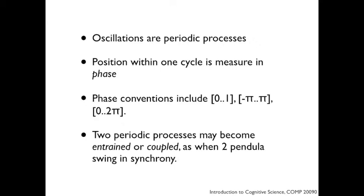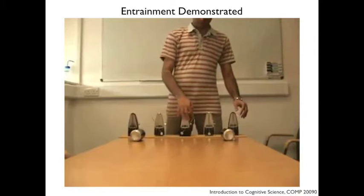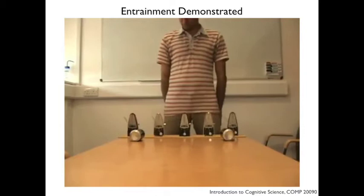When oscillating systems interact, they frequently become non-independent — we say they become entrained or coupled, and I will use those terms synonymously. Two pendula, for example, if they can influence each other, will become entrained or coupled. We can illustrate this with a system in which five individual oscillators are started at different frequencies. Initially they can't influence one another, and then after a while they can, and you'll see the result.